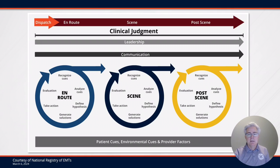In the end, this is the model we're going to be using to evaluate clinical judgment, leadership, and communication. Each piece of this model has very important information — en route, scene, post scene, leadership, communication — and those six steps of clinical judgment: recognize cues, analyze cues, come up with a hypothesis, generate some solutions, take an action, and ultimately evaluate if those actions are doing something good for the patient or not.